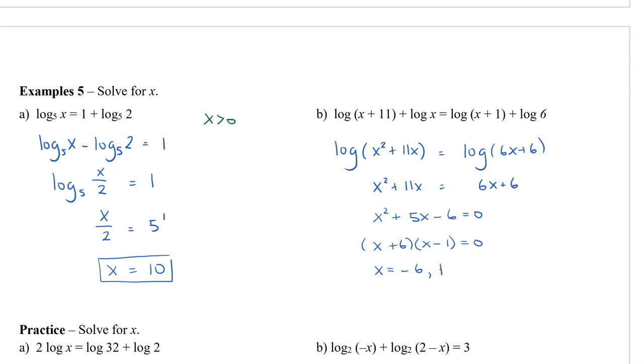Checking my restrictions, for this part I have x has to be greater than negative 11. Here I have x has to be greater than 0. In this last part I have x is greater than negative 1. Now out of these three, x is greater than 0 is the most restrictive restriction.